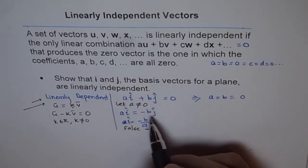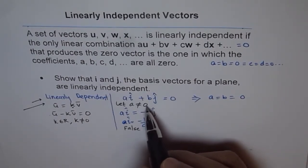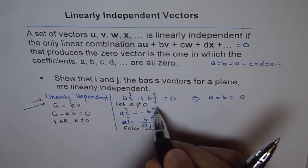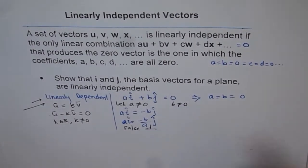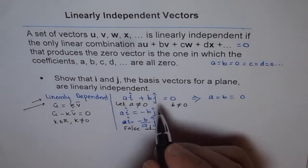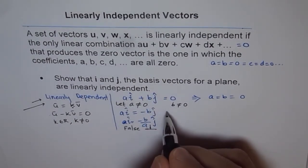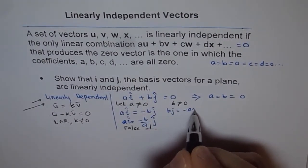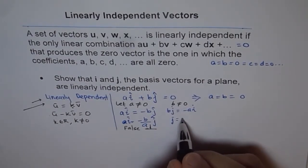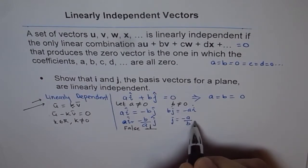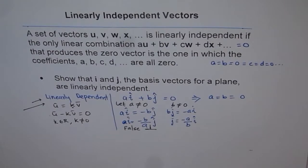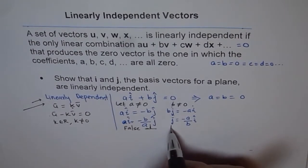Similarly, if we assume b is not equal to 0, then we can write b·j = −a·i, or j = −(a/b)·i. Again, we are claiming they are parallel, but they are not parallel — they are perpendicular. So this is also false.